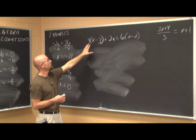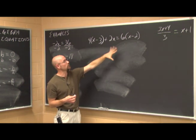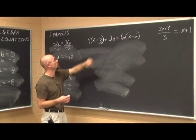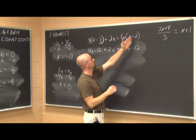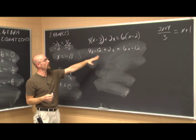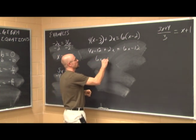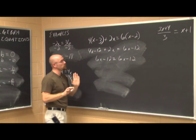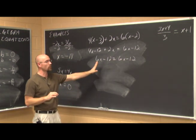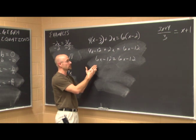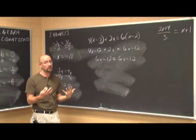Let's look at this next example. We assess the domain — no x's in denominators and no radicals, so the domain is all real numbers. First, let's simplify by clearing parentheses using the distributive property. Now I have a simplified equation and can combine like terms: 4x and 2x give 6x. At this point, we might recognize that both sides are the same: 6x minus 12 equals 6x minus 12. So any value of x works — the answer is all real numbers.